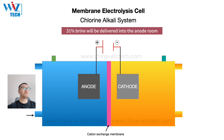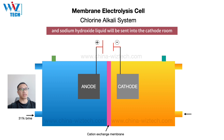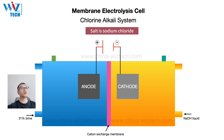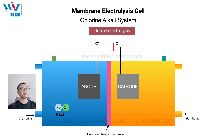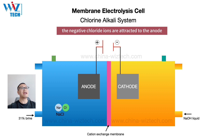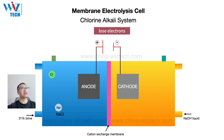31% brine will be delivered into the anode room, and sodium hydroxide liquid will be sent into the cathode room. Salt is sodium chloride — we have sodium ions and chloride ions. During electrolysis, the negative chloride ions are attracted to the anode, lose electrons, and are oxidized to chlorine gas.